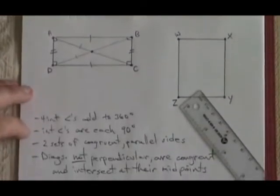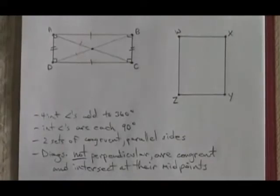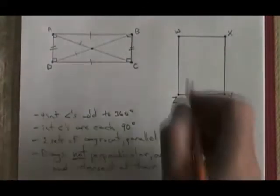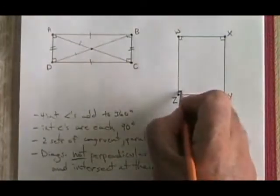I'll move this so that you can see it. This lists all the properties. Looking at this other rectangle, let's take a look at these properties. The four interior angles have to each be 90 degrees and, of course, add up to 360 degrees.